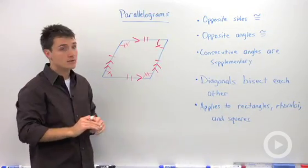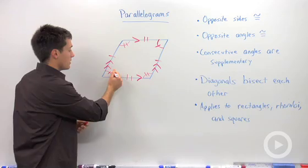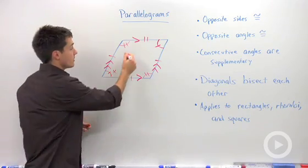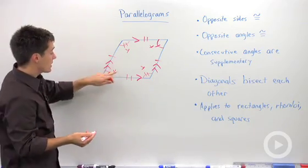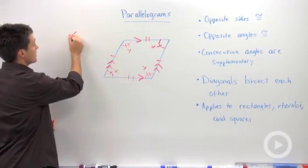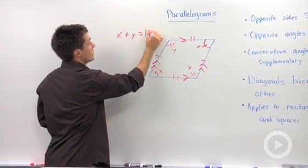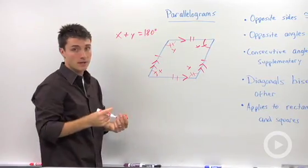Next thing is consecutive angles are supplementary. So if I call this angle x, and if I call this angle y, so this would be x and this would be y. No matter how I looked at this, consecutive angles, x plus y, they're going to equal 180 degrees.